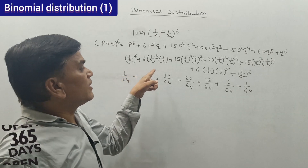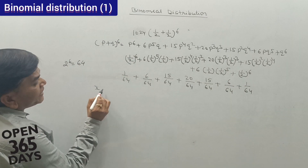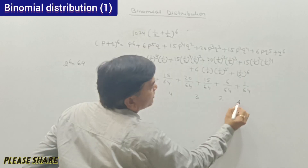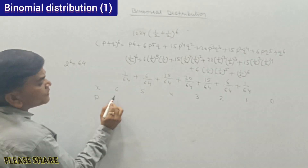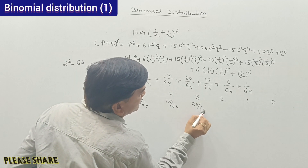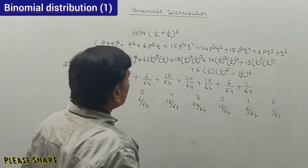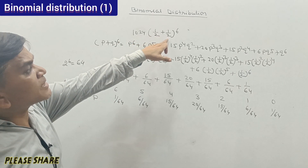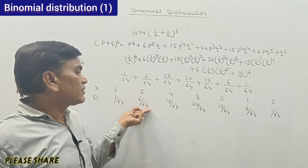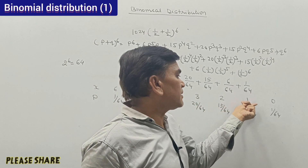Adding these: 1 + 6 + 15 + 20 + 15 + 6 + 1 = 64/64 = 1. The probabilities are: getting 6 heads = 1/64, 5 heads = 6/64, 4 heads = 15/64, 3 heads = 20/64, 2 heads = 15/64, 1 head = 6/64, 0 heads = 1/64.